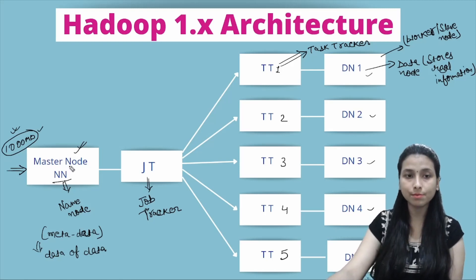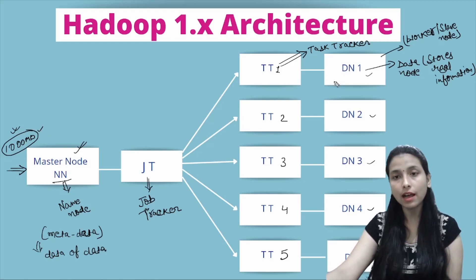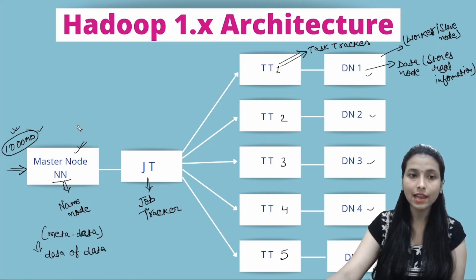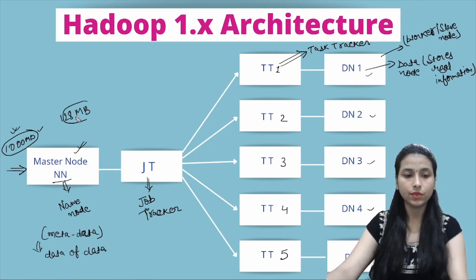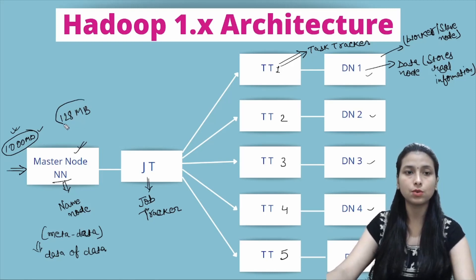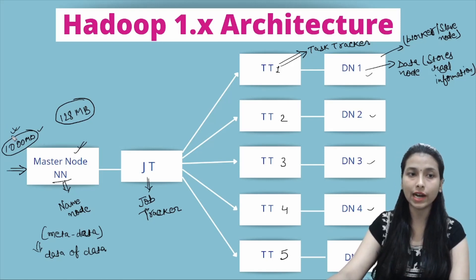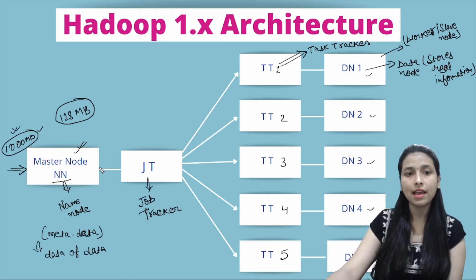Once the Name Node understands the type and size of the data and the availability of the Data Nodes, it divides the file into chunks of 128 MB each. So this 1000 MB file gets split into 128 MB chunks, and these chunks are then passed to the Job Tracker.